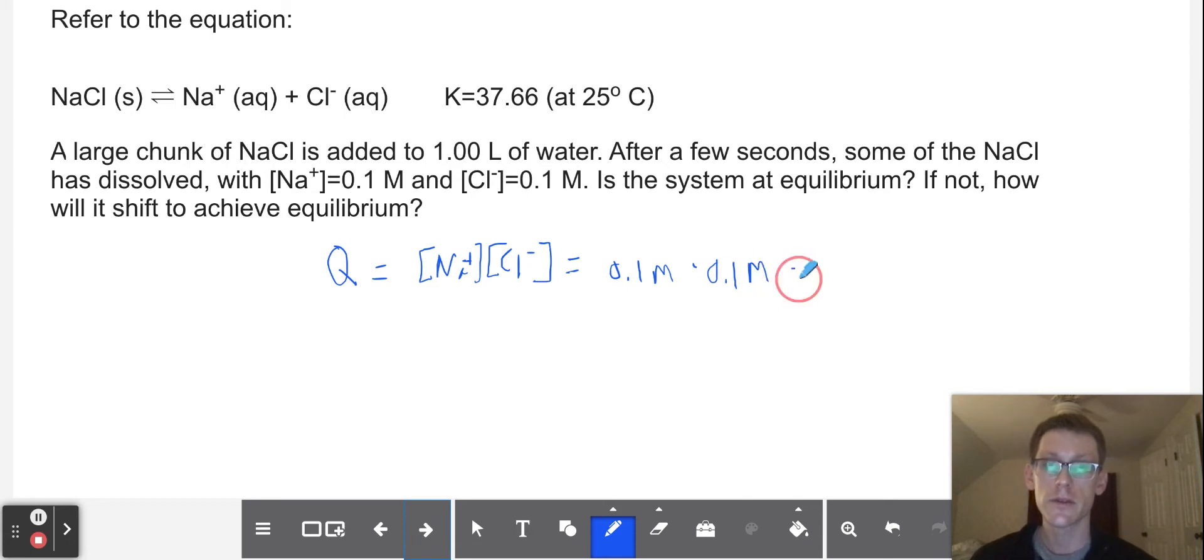And so this is equal to 0.01. So our system is apparently not at equilibrium because the K is significantly bigger than Q. If K and Q are not the same, then you don't have a system at equilibrium. So what this tells us is that the system is going to have to shift rightward to achieve equilibrium. We know this because K is significantly bigger than Q.